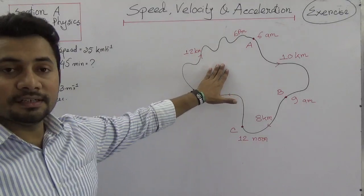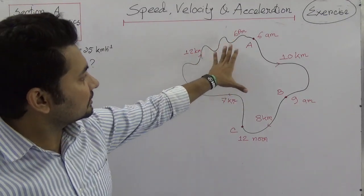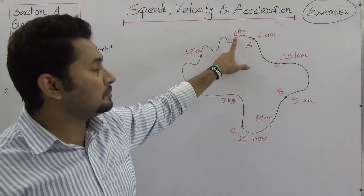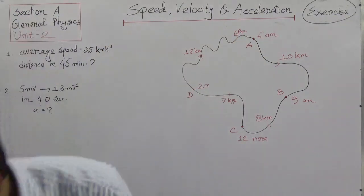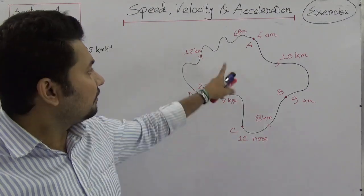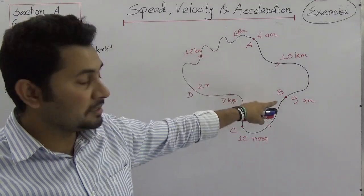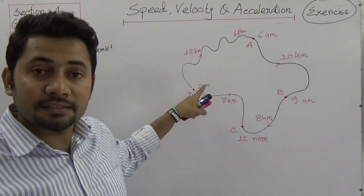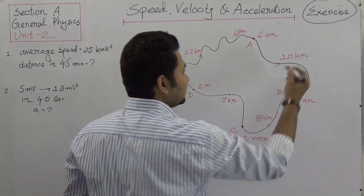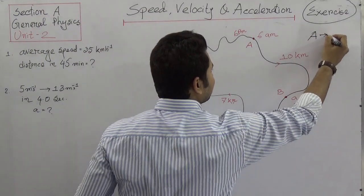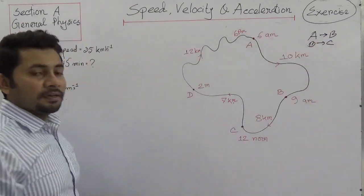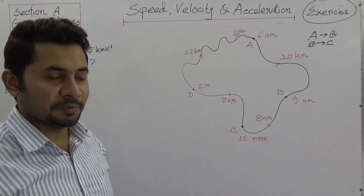And the third question: a cyclist rides from 6 a.m. to 6 p.m. The question in your book asks what is the average speed of this cyclist from A to B, from B to C, and for the whole journey. So we need to understand how to measure average speed across different segments and the total route.